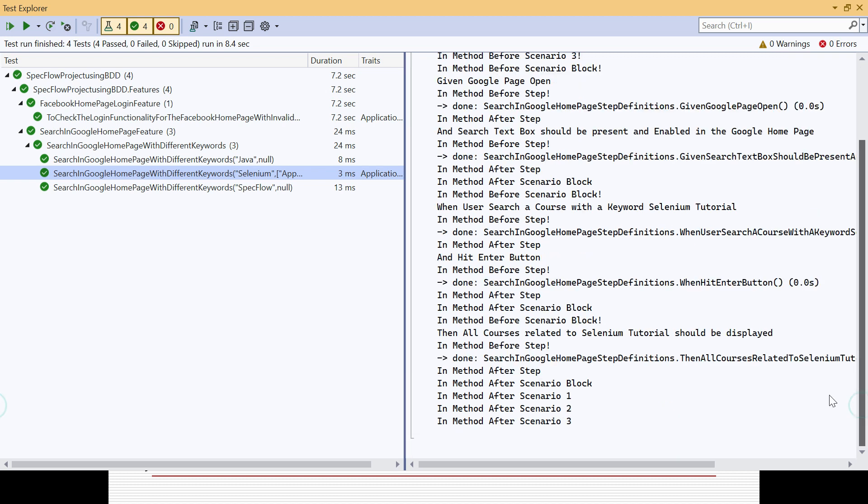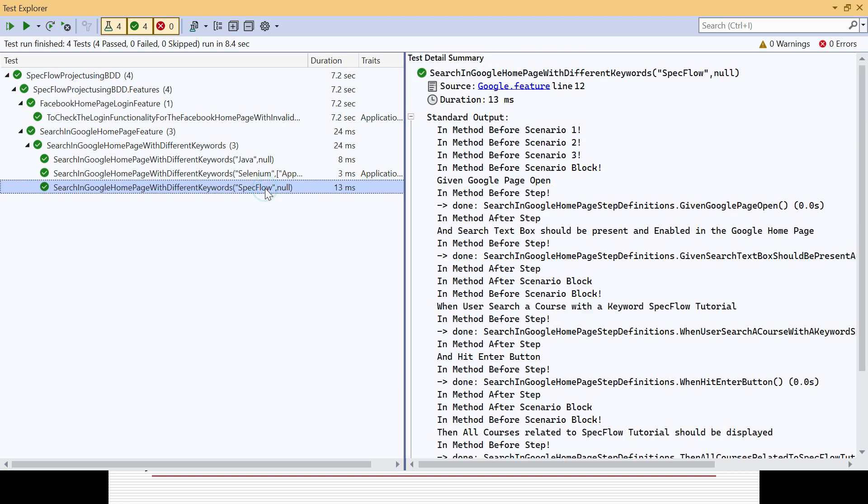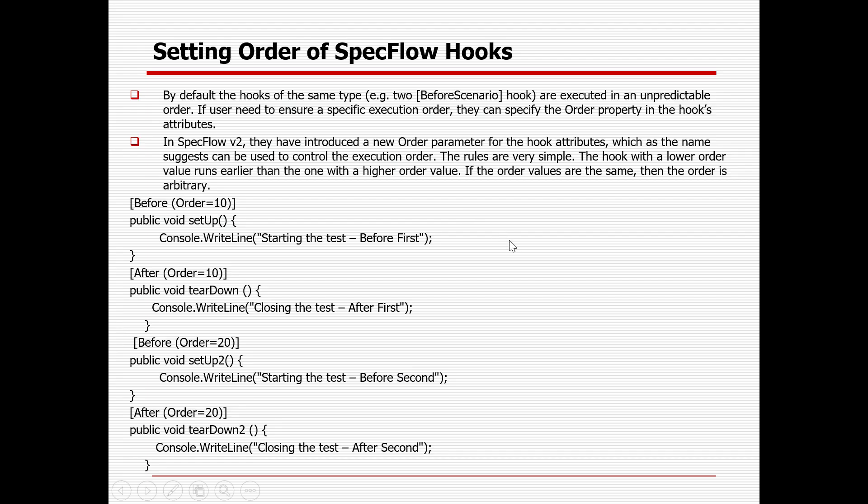By default, if you don't specify any order, hooks execute in random order and you cannot guarantee the execution sequence. That is why you need to introduce the order parameter in the hook attribute - it gives you control over execution order whenever similar hooks are repeated multiple times. That's all for this session, thank you.